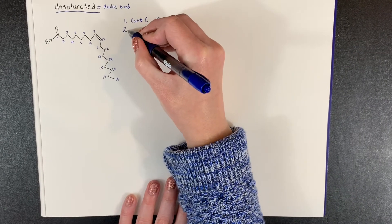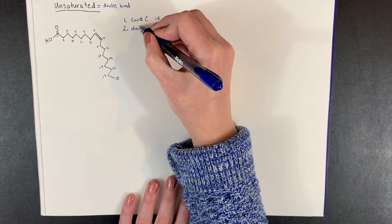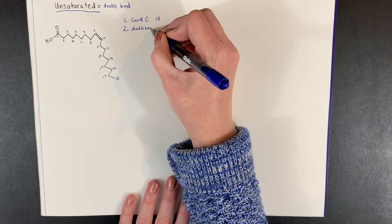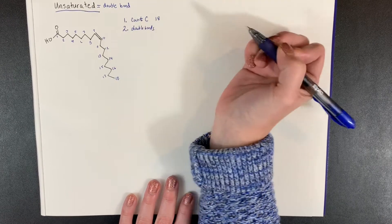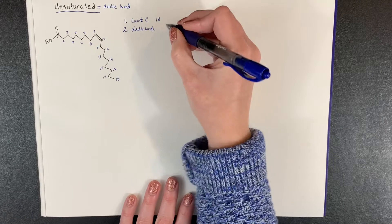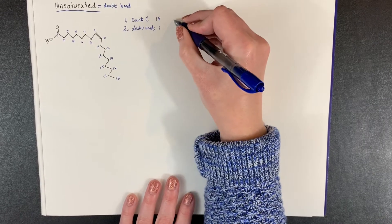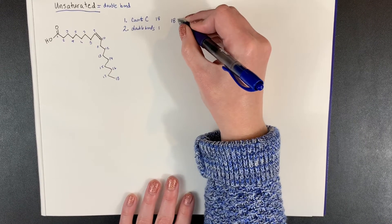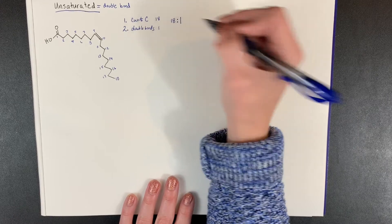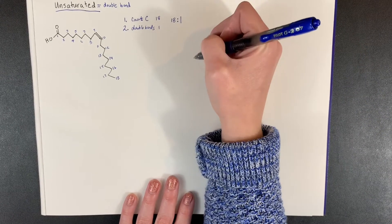Step two is still the same: count your double bonds. This will be the first example where we do have a double bond — we have one double bond. Using that numerical way to identify fatty acids, it would look like this: 18:1.